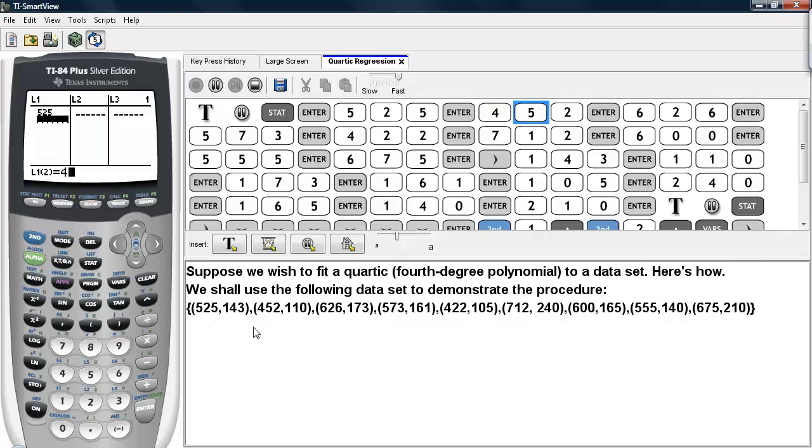Now the first number in each one of these ordered pairs represents the x-coordinate of the point and they will be placed into L1. The second number in each of these ordered pairs represents the y-coordinate of the data value and they will be put into L2.